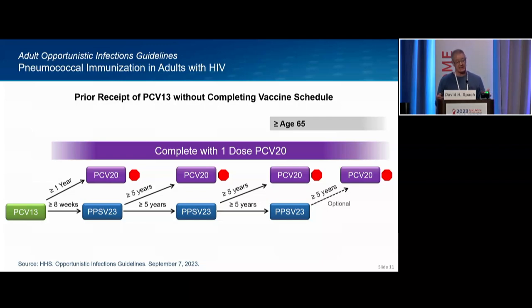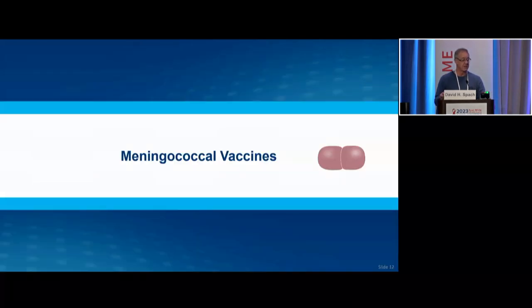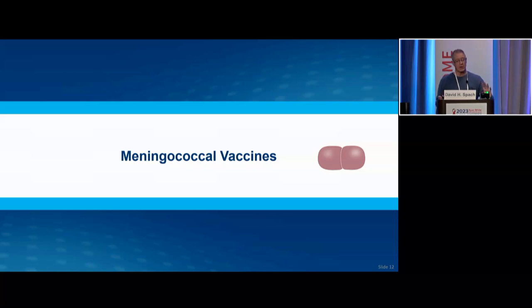This simplification should increase pneumococcal immunization rates in Ryan White clinics. From a primary care standpoint, having such simplified recommendations is really a great thing. Having done HIV for a long time, I can tell you many people get pneumococcal bacteremia and invasive disease, so this is truly a high priority vaccine.